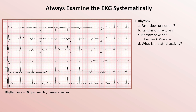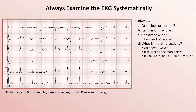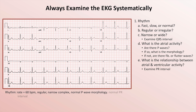Next, what is the atrial activity? More specifically, are there P-waves? If so, what is their morphology? And if not, are there fibrillation or flutter waves? In this EKG, P-waves are normal. The final rhythm question is what is the relationship between the atrial and ventricular activity, which requires examination of the PR interval — normal here — and recognition that there is a one-to-one relationship between P-waves and QRS complexes, with each P coming immediately prior to the corresponding QRS. From those five steps, we should know the rhythm, which is normal sinus.